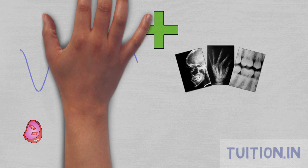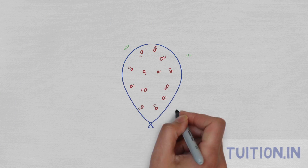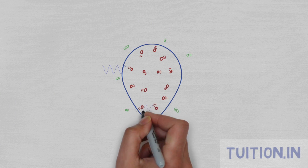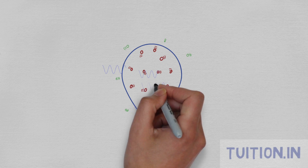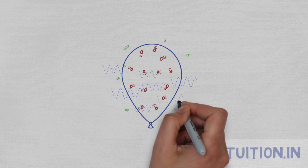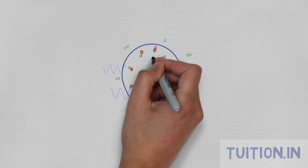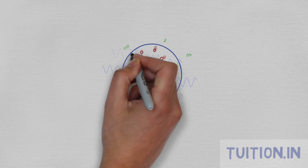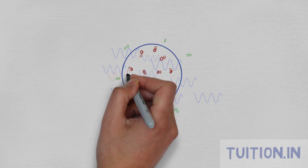Which is why lead aprons are often used to block them. When X-rays interact with matter, they collide with electrons. Sometimes the X-ray transfers all of its energy to the matter and gets absorbed completely, and at other times it only transfers some of its energy and the rest is scattered.